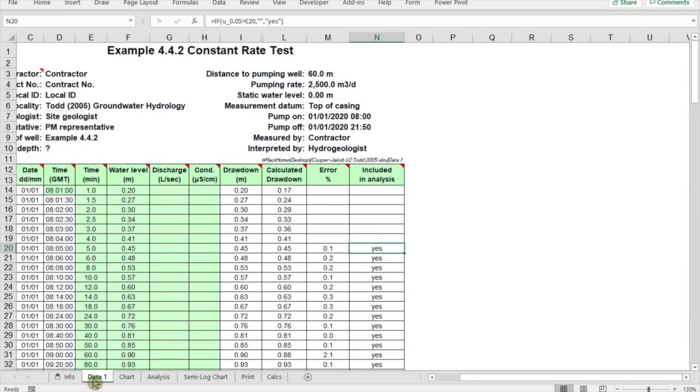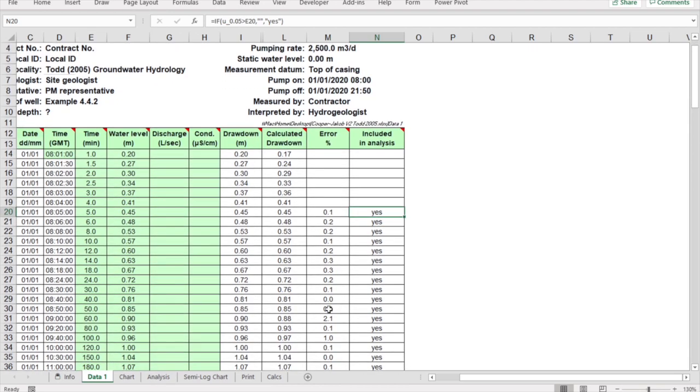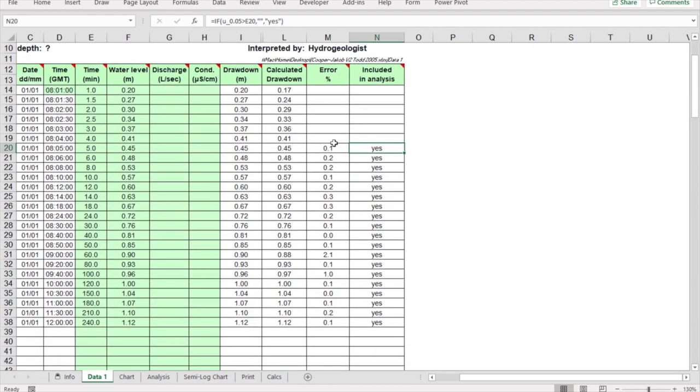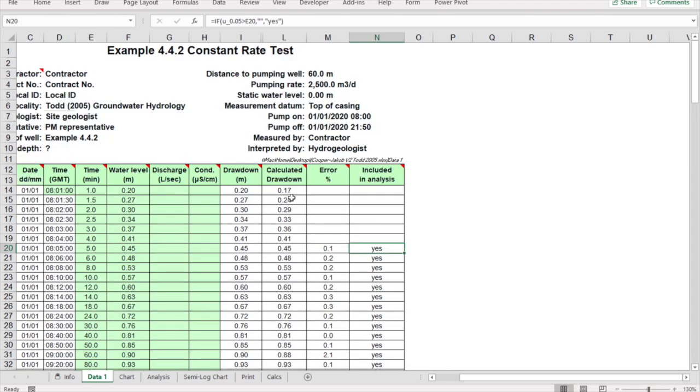If we go to data, you can see here the calculated drawdown, which is based on our Cooper-Jacob straight line equation, and the fitting error in percentage. The points which are above U equals 0.05 are not included in the analysis of our overall error.